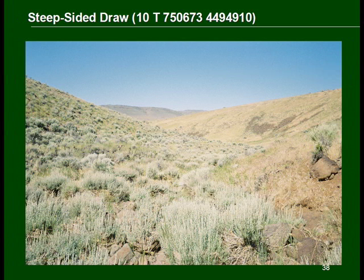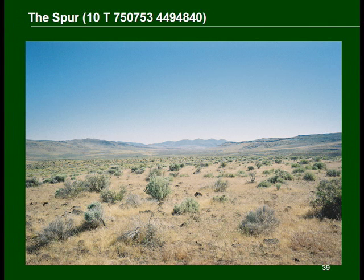This steep-sided draw was crossed on a perpendicular track by the virtual hiker because the algorithm only looks so far ahead in terms of seeking a better path, and in this case found no advantage within its cone of vision and simply cut straight across. The spur to the east side of the steep-sided draw offers a nice view of the Skedaddle Mountains to the south.